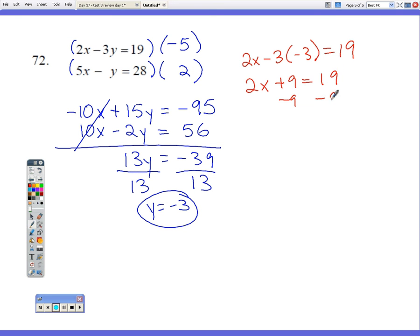Subtract 9 from both sides. 2x equals 10. If we divide it by 2, we get x equals 5. So our ordered pair is going to be 5, negative 3.